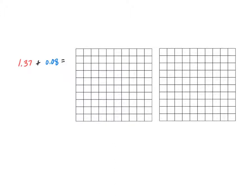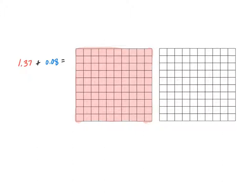In the next example I have one and thirty-seven hundredths plus eight hundredths. The first thing I'm going to do is model my first decimal. For one and thirty-seven hundredths, I'm going to shade this entire decimal square — you don't have to be perfect, you can just put a big X through it. I'm going to shade it in quickly. So there's one whole. I need three tenths: one tenth, two tenths, three tenths. And then seven hundredths: one, two, three, four, five, six, seven. I've now modeled my first decimal.